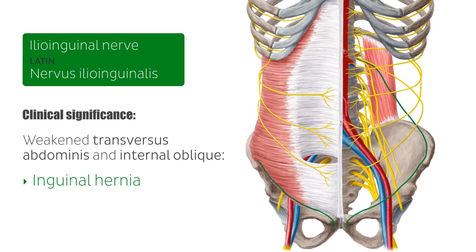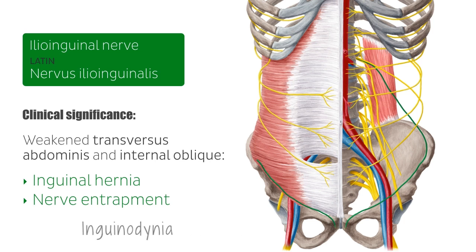The surgical repair of an inguinal hernia may sometimes cause a condition known as nerve entrapment. Both injury or entrapment of the ilioinguinal nerve can lead to post-herniorrhaphy pain syndrome or inguinodynia, which is chronic pain in the groin region lasting more than three months. If this occurs, the condition can be treated with an ilioinguinal nerve block.